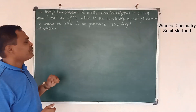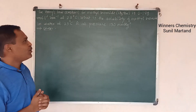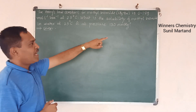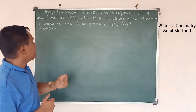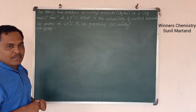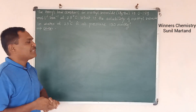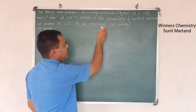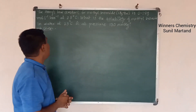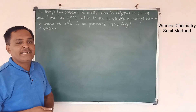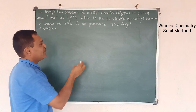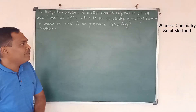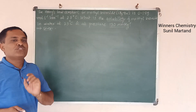Henry's law concept for methyl bromide (CH3Br) gives a Henry's law constant of 0.159 moles per litre per bar at 25 degree Celsius. The question asks: what is the solubility of methyl bromide in water at 25 degree Celsius at a pressure of 130 mmHg?